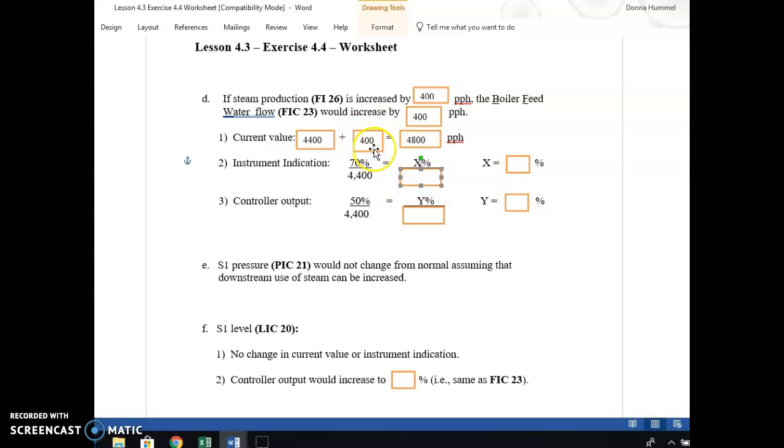What's our instrument indicating? So we go back to our normal operating conditions table at 70%. At 4,400, it's 70%. And here our ratio at our new number is 4,800. What is the percentage rating? This is just teaching you ratios. It's all mathematical. It's linear. That is equal to 76.4. We're going to put it in like that. Then the output, because FIC23 is a controller, at 4,400 it's normally open 50%. So what is the new output from the valve going to be? At our new number of 4,800, that will equal 54.5. Let's put that in there.